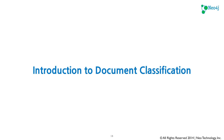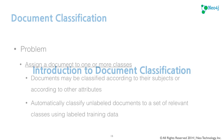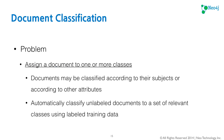Now let's get to the good stuff — the introduction to document classification. The problem is that you'd like to assign to a document one or more classes. Documents may be classified according to their subject or other attributes. The goal is to automatically classify unlabeled documents to a set of relevant classes using labeled training data.